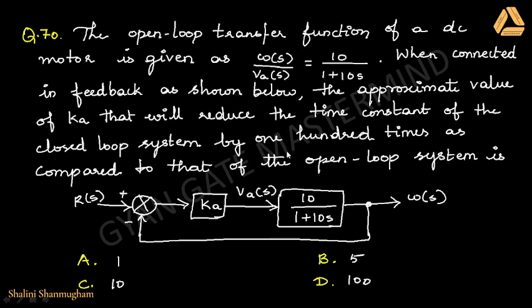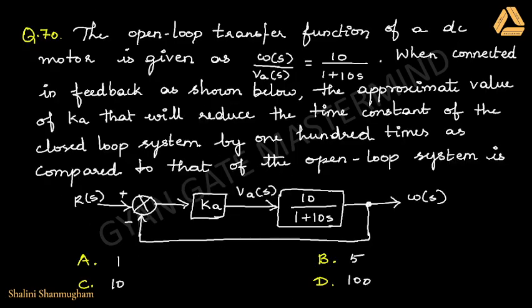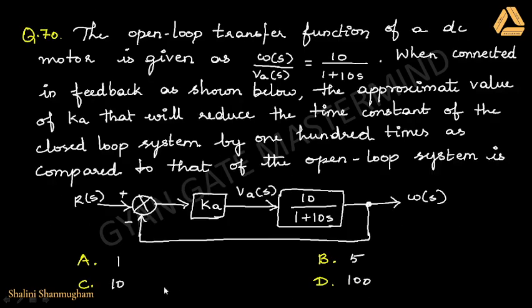From the question, the closed loop time constant is reduced by 100 times compared to the open loop: τ_CL = (1/100)·τ_OL = 1/10. Substituting and equating 1/10 = 10/(1 + 10·Ka), solving gives Ka ≈ 10. So the answer is choice C: Ka = 10.